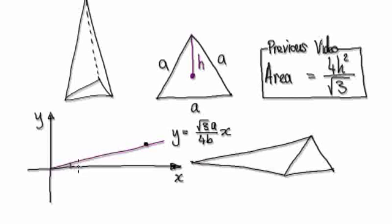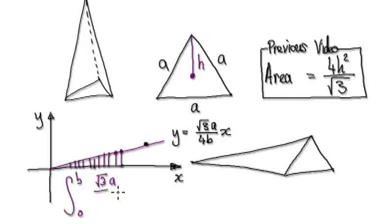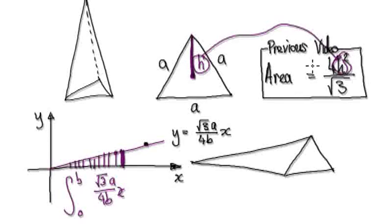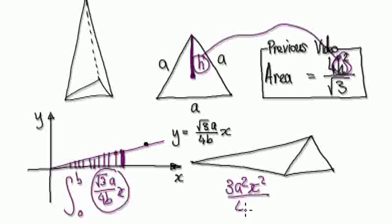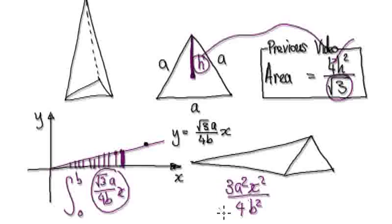Let's start again. We're moving along; we need the height each step of the way, which is √3a/(4b)·x. We've got the height — now we need the area. So we need to square the height. Squaring gives us 3a²x²/(4²b²). Then we multiply by 4 and divide by √3, which gives us our area for each cross-section.